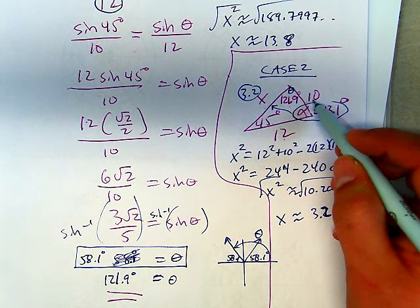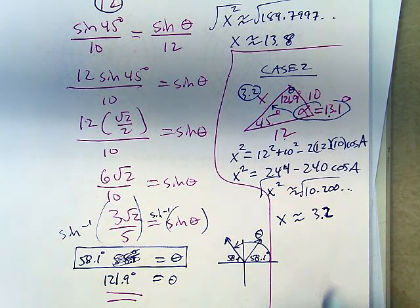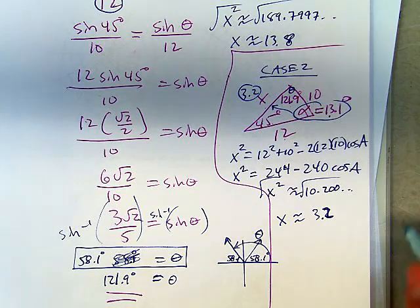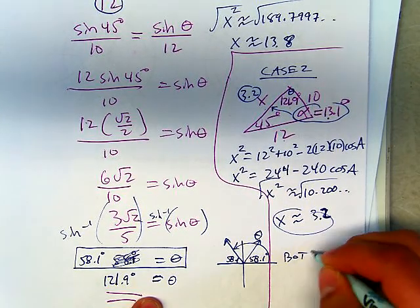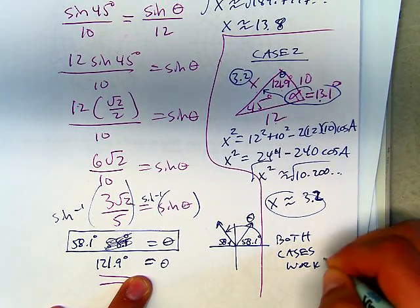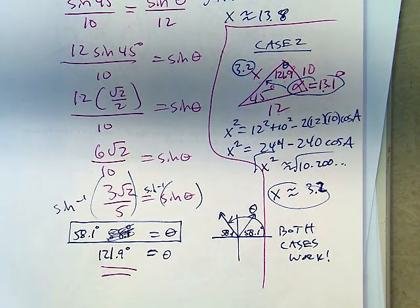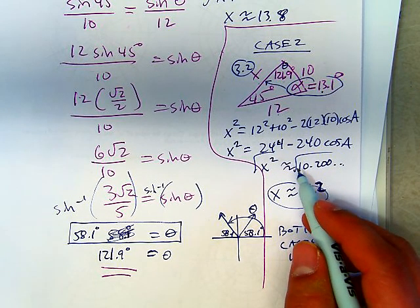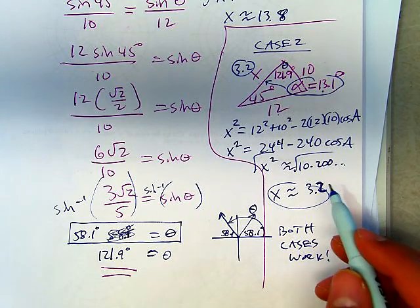So that works. And this is another scenario. So both cases work. You always have to check for both cases. One thing I neglected to mention was that when we're square rooting all this stuff here, since we're dealing with side lengths, I am dropping out the plus or minus since we can only have positive lengths.